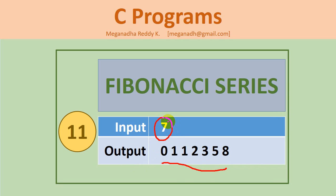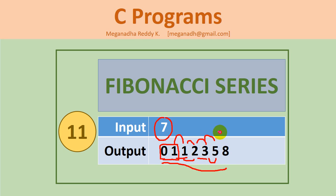So if we enter seven, we need to print seven elements — the first seven elements of Fibonacci series. Fibonacci series is nothing but the sum of previous two elements is the next element. So zero and one are the first two elements of the series. When we add these two, we will get one. When we add these two, we will get two. When we add these two, we will get three. Two plus three is five, and three plus five is eight.